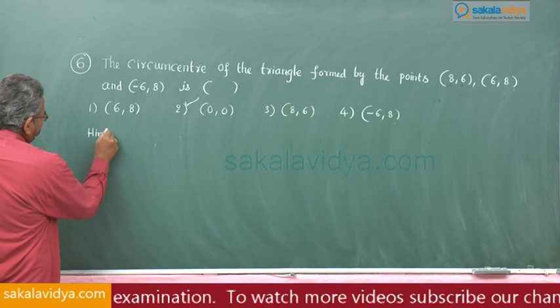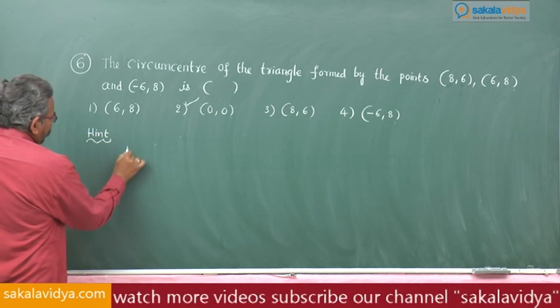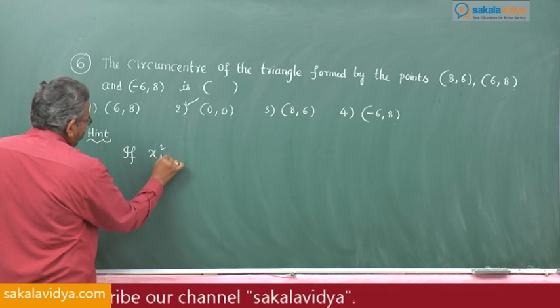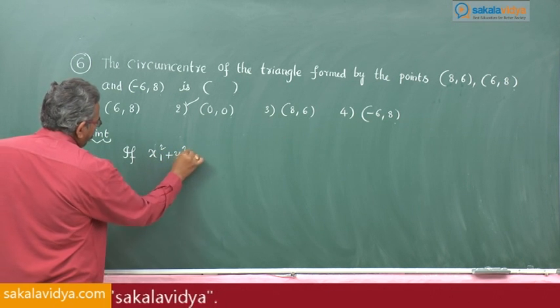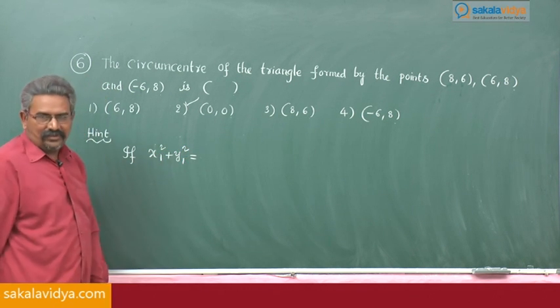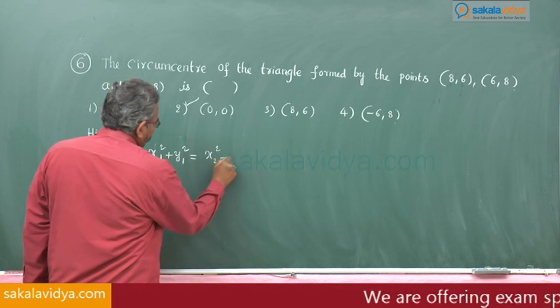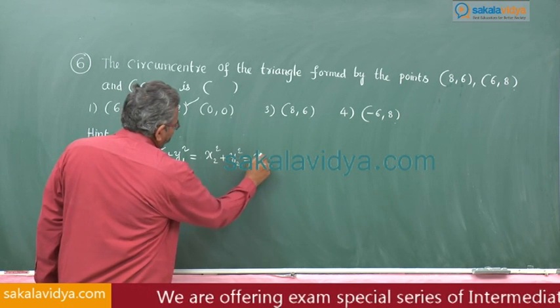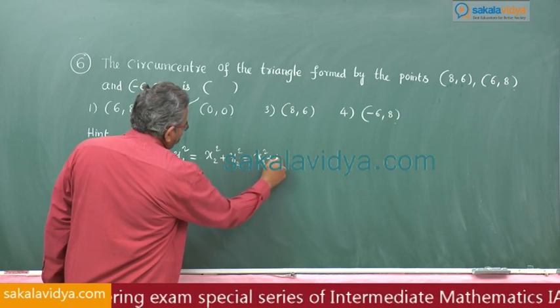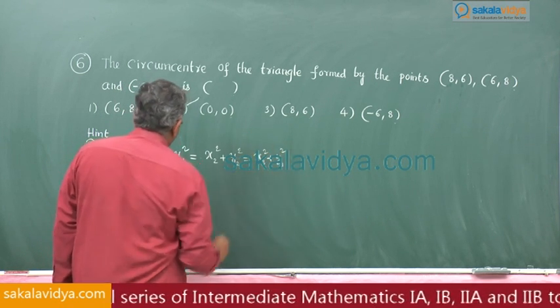if x₁² + y₁² is equal to x₂² + y₂² equals x₃² + y₃². Then,